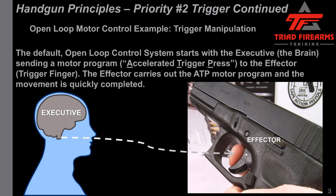Here's an example of open loop motor control as it relates strictly to trigger manipulation. Our default open loop control system starts with the executive, or brain, sending a motor program — in this case, accelerated trigger press, or ATP — to the effector, which is our trigger finger. The effector then carries out the ATP motor program, and the movement is quick and completed. The brain says: accelerate trigger press.